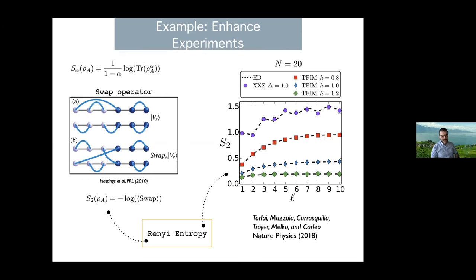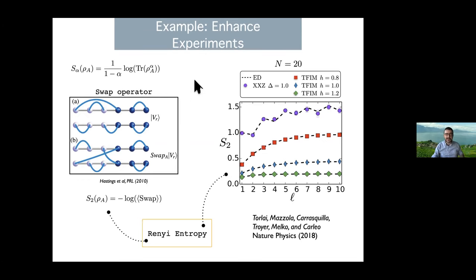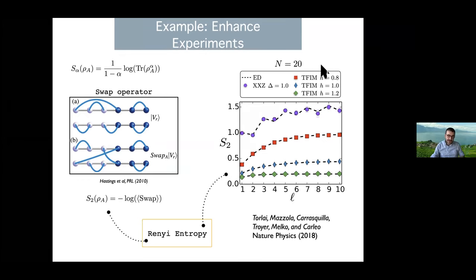This approach also allows you to measure quantities that you were not able to measure directly in the experiment. If I have a parametrization of the wave function obtained from experimental data, I can use this parametrization on a classical computer to measure other observables that I couldn't measure directly on the quantum hardware. For example, entanglement entropy — theoretically important but very hard to measure experimentally, with records for only a few particles directly measured — can be inferred for much larger systems of order 20 using this reconstruction approach.